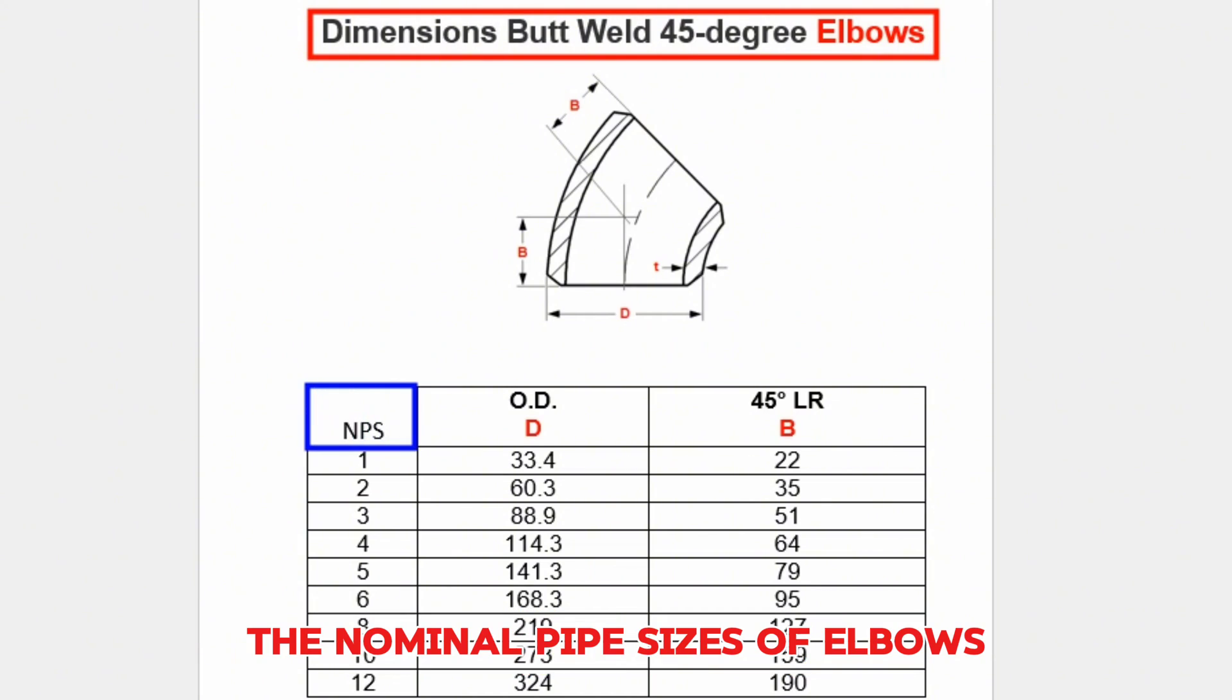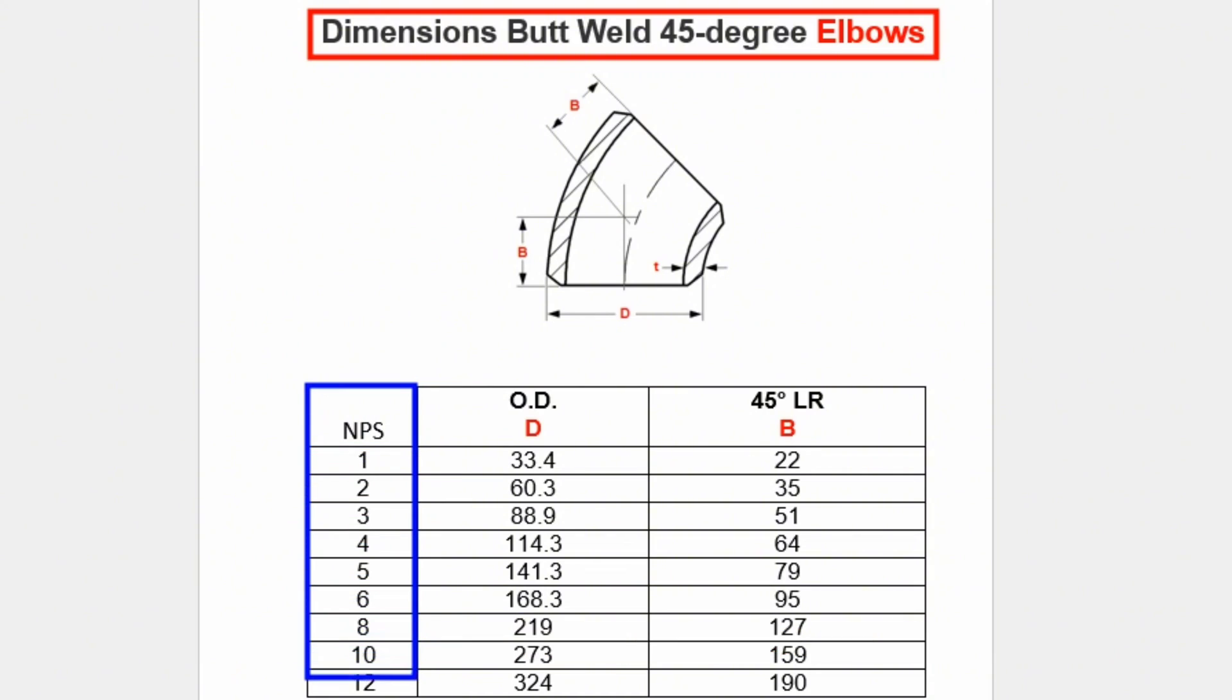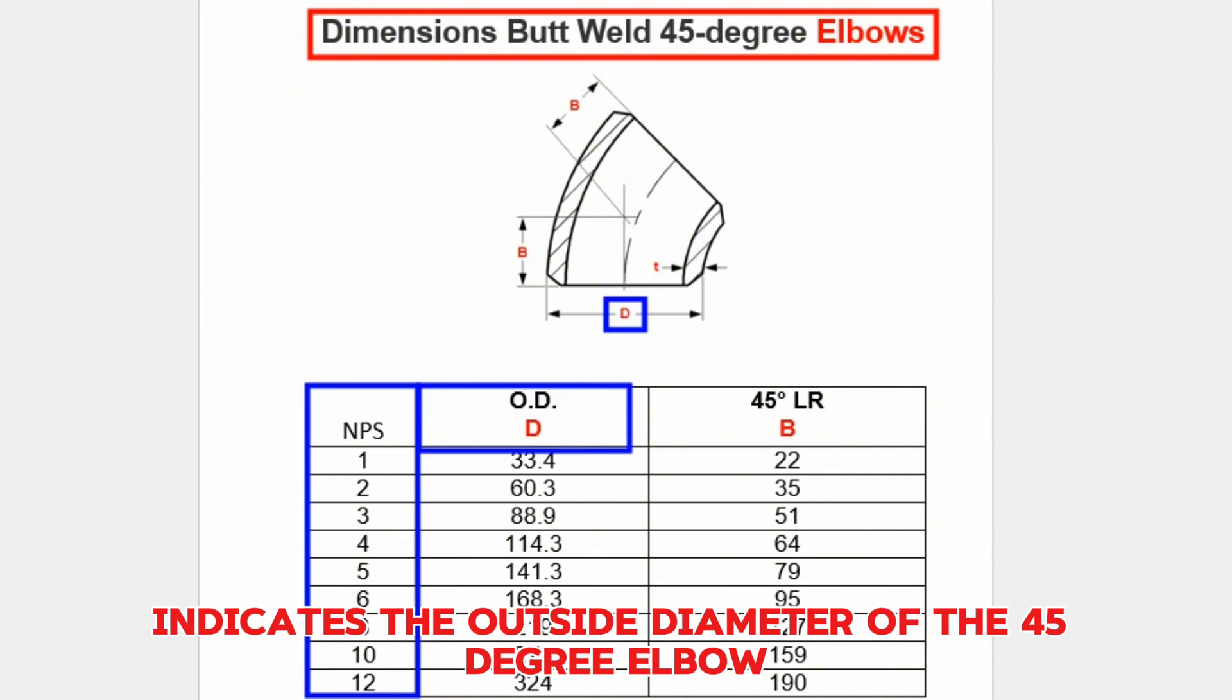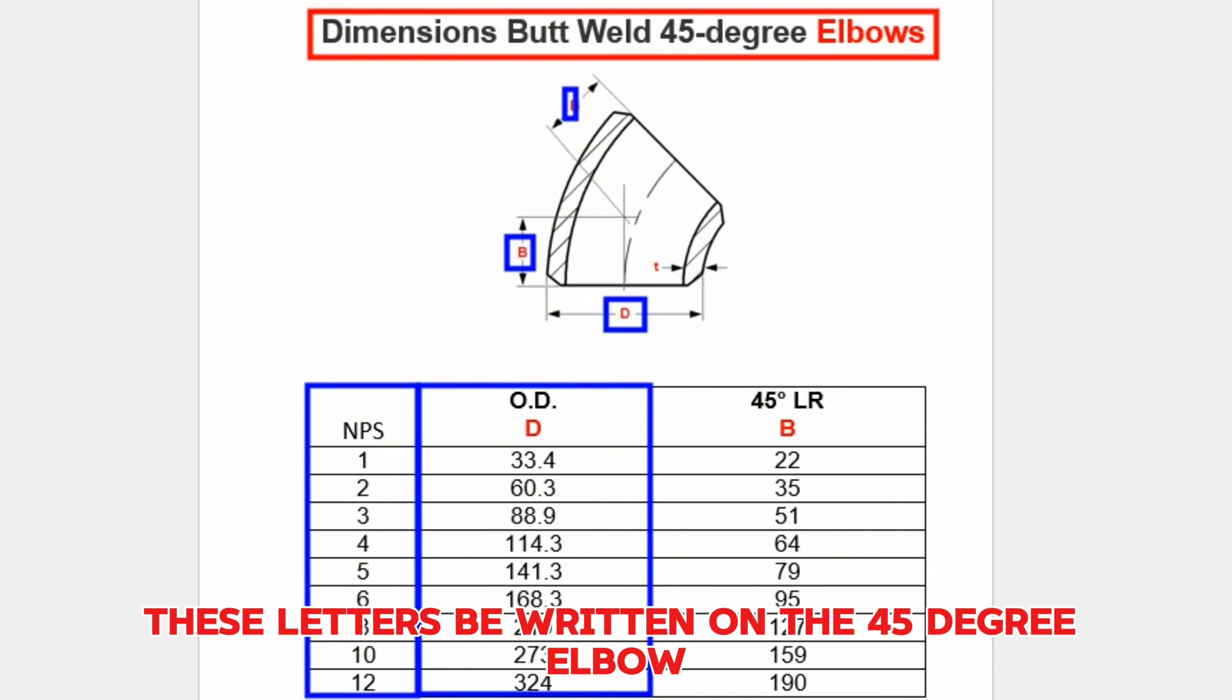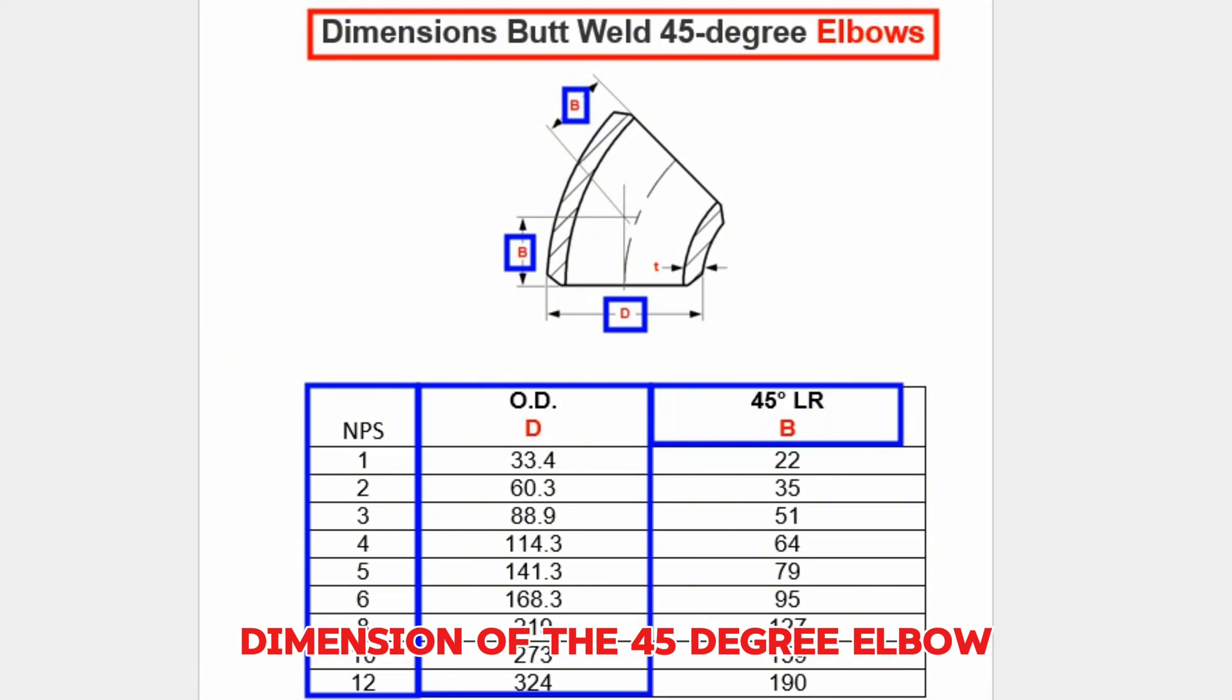The nominal pipe sizes of elbows are shown in the first column of this table. The letter D written on the 45-degree elbow indicates the outside diameter and is shown in this column. The letter B indicates the length of the center-to-end dimension of the 45-degree elbow and is shown in this column.